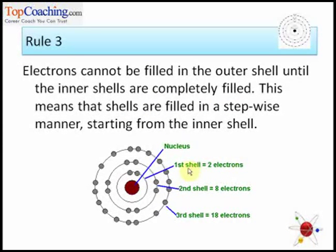You must be seeing those numbers. First shell 2 electrons, second shell 8 electrons and third shell 18 electrons. Bohr also gave a rule for filling those electrons. Let us see what the rule is.